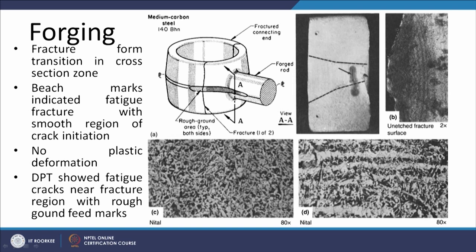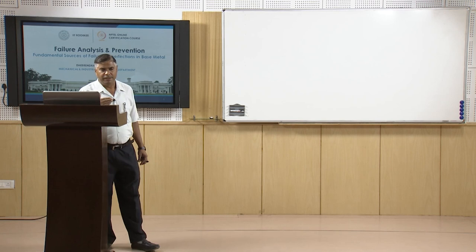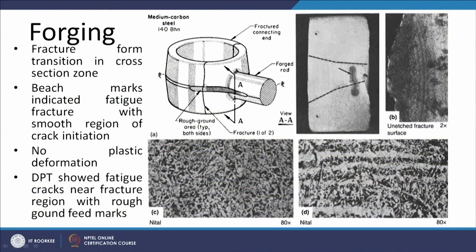The failed component showed a banded structure where bands of ferrite — the light-etched zones — were clearly visible. Since ferrite is weaker than pearlite, if such banded structures fall in zones of high stress, they easily provide sources of stress concentration and weakness from which cracks can nucleate. In this case, the region where fracture took place was subjected to rough grinding, had a banded structure, and fell under high-stress zone conditions. These conditions led to easy crack nucleation, and beach marks in the failed component indicated failure by fatigue.